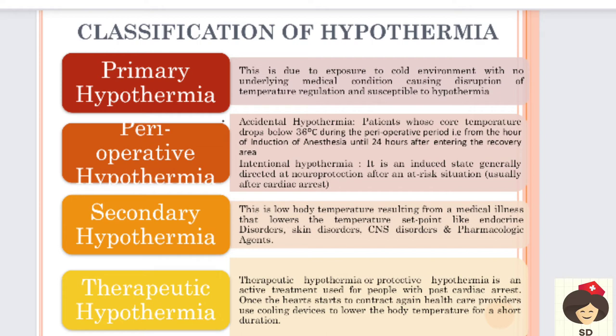Next is secondary hypothermia - due to some medical illness where the body's temperature is lowered, such as endocrine disorders, skin disorders, CNS disorders, or pharmacological agents. When due to some diseases the body is not able to maintain temperature, we call it secondary hypothermia. In therapeutic hypothermia - also called protective hypothermia - active treatment is done for the patient after a cardiac arrest. When the heart stops beating, once the person is treated and the heart starts contracting, healthcare providers administer cooling fluids or cooling devices to prevent tissue injury.